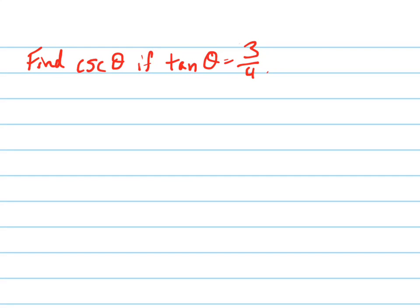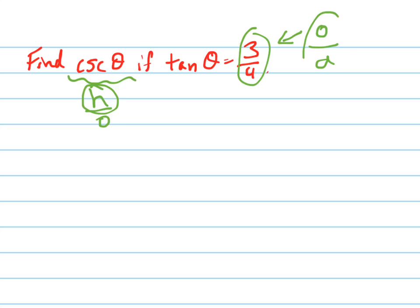We're going to find the cosecant of theta if tangent of theta equals 3 fourths. The cosecant — I can't just use 3 fourths, I'm going to have to draw a picture. The reason I can't use 3 fourths is because the cosecant is related to the hypotenuse and the opposite. It's the reciprocal of the sine, and the tangent is related to the opposite and the adjacent. But I can find the hypotenuse by drawing a picture with the opposite, the adjacent, and the hypotenuse.